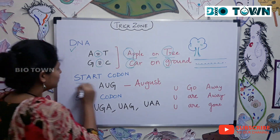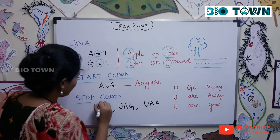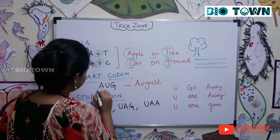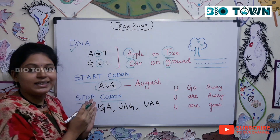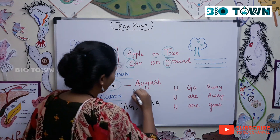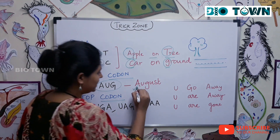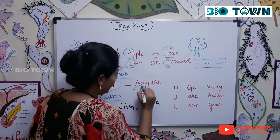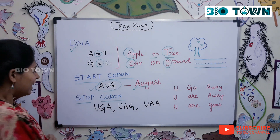Next, start codon and stop codon. Start codon — it's a very simple trick: August. The first three letters, AUG, is the start codon.